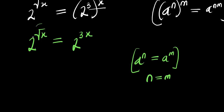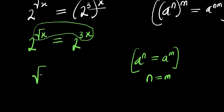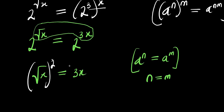So we can equate these exponents. We simply have square root of x equals 3x. To solve for x, we can take the squares of both sides of this equation.